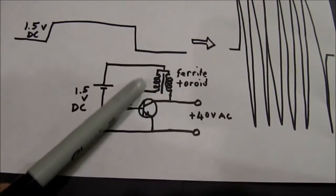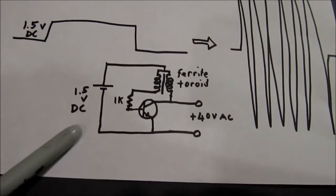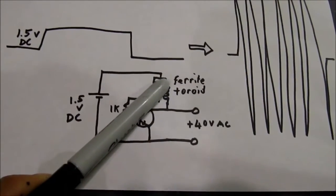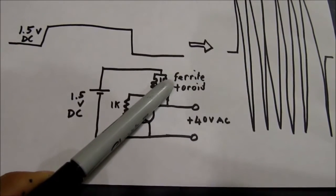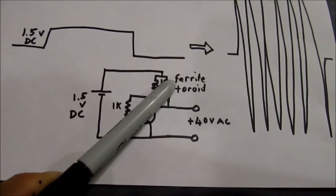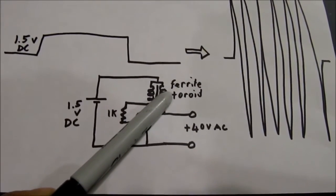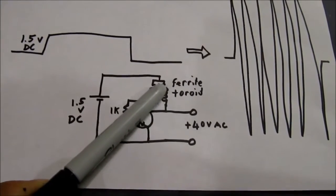Once the transistor turns off, the electricity can no longer flow through this back to the battery. While the electricity was flowing through this, it developed a magnetic field that collapses and causes electricity to flow the opposite direction.